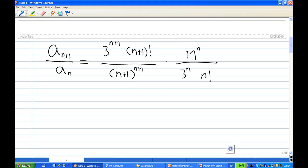Now for this you notice that there will be a lot of cancellation. First of all, 3 power n plus 1 is 3 power n times 3. n plus 1 factorial is actually n plus 1 times n factorial. So you may wonder how I get into this. So let's do a little bit of explanation.